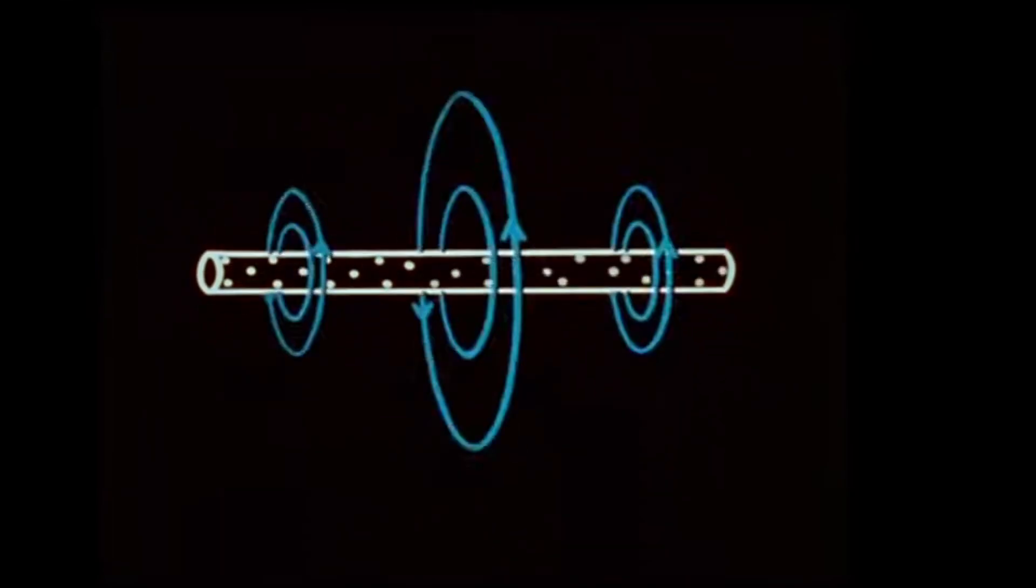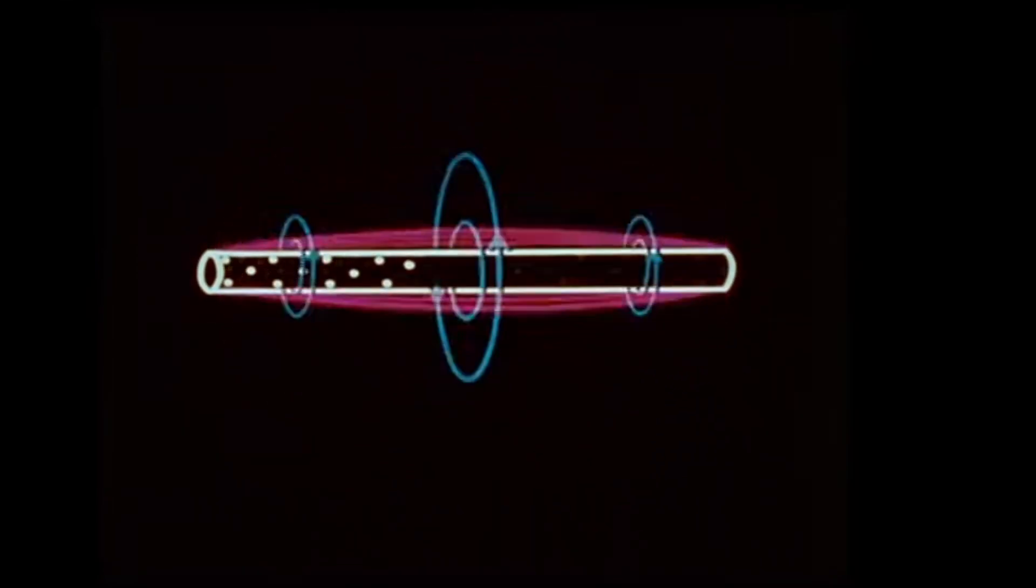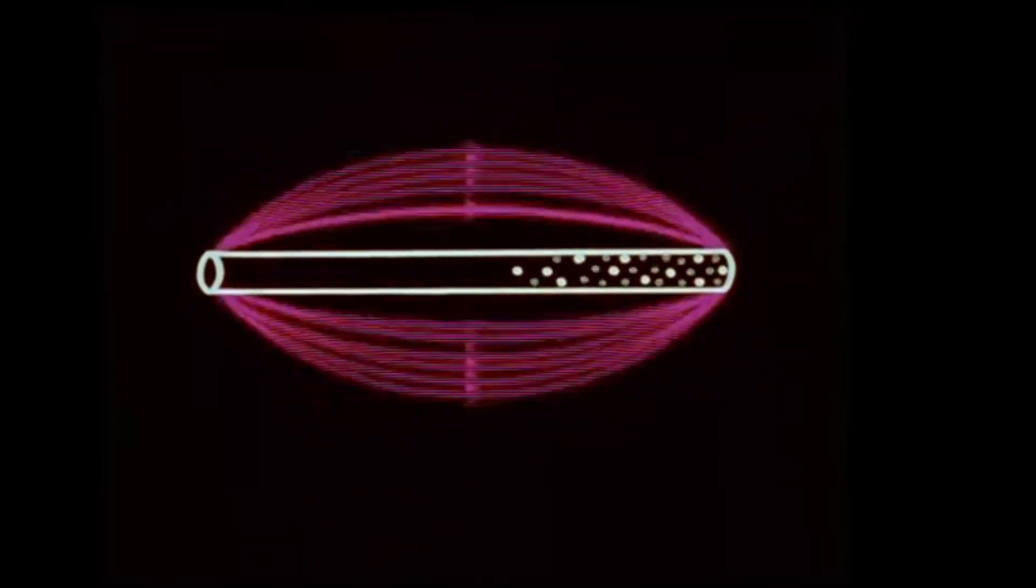The E and the H fields thus build and collapse 90 degrees out of phase with each other, and constitute the antenna's immediate field.